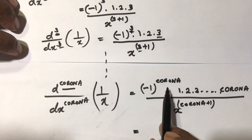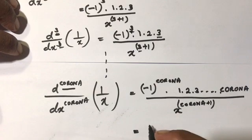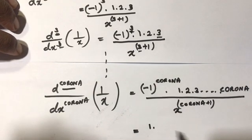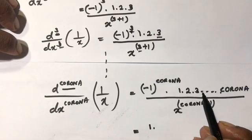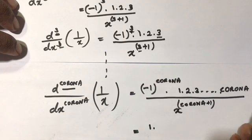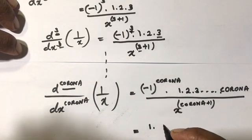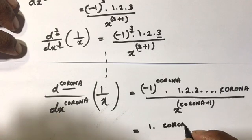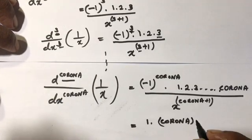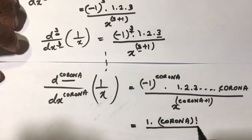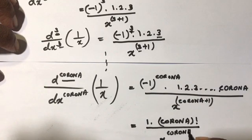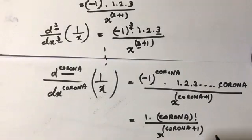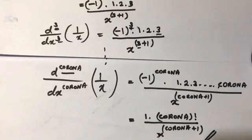Since n is an even natural number, minus 1 to the n power equals 1. And 1 times 2 times 3 up to n is n factorial. So the final answer is n factorial over x to the n plus 1 power. Please stay at home, be safe, and thank you for watching.